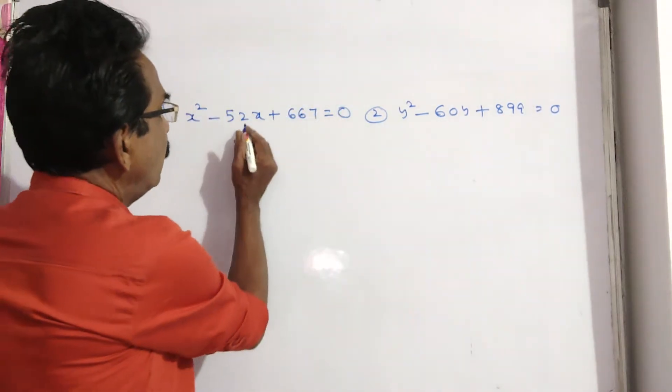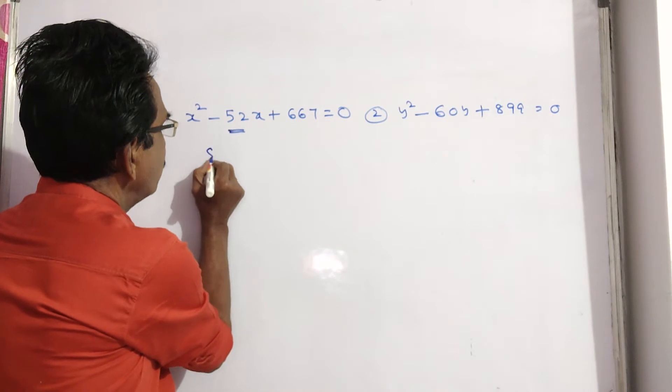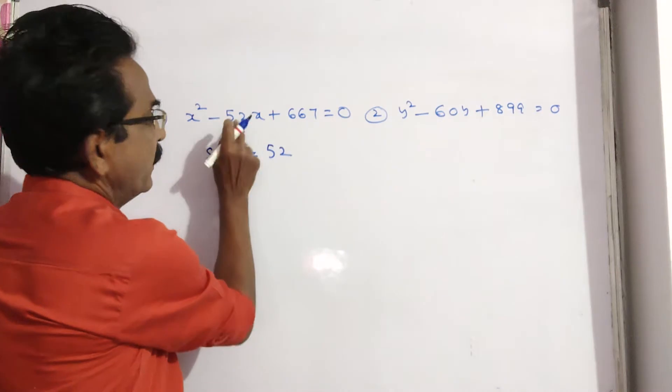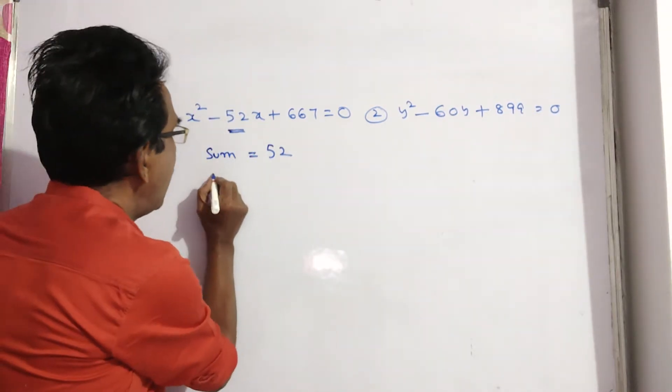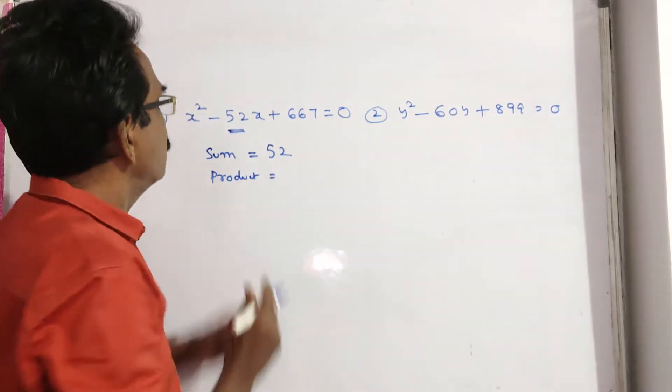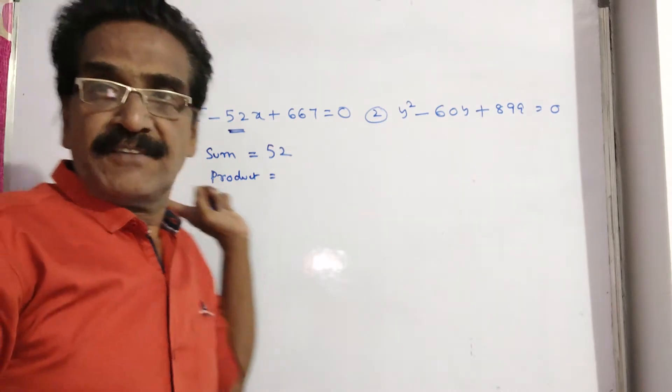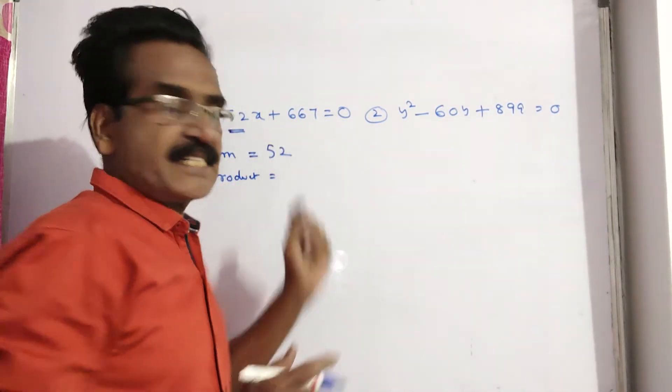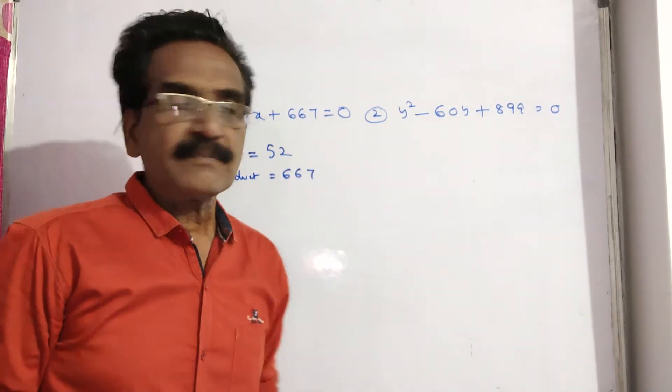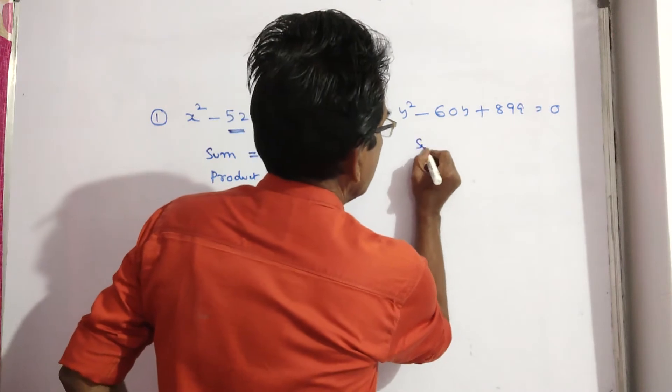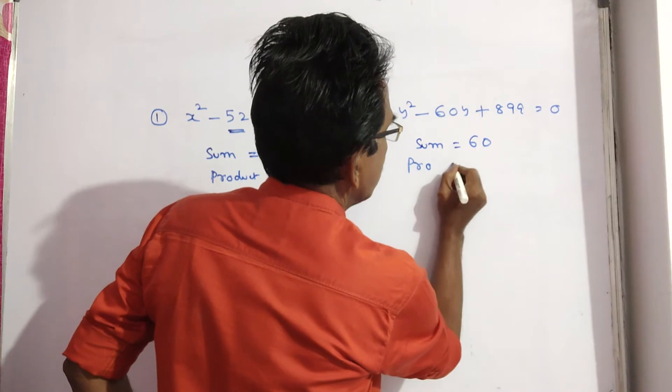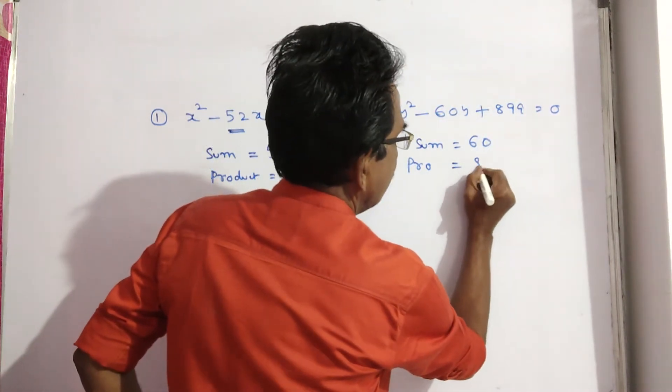Then sum of the roots must be 52 and product of the roots is equal to ac. The coefficient on x square here is 1, so 1 into 667, product must be 667. Here also, sum must be 60 and product must be 1 into 899, which is 899.